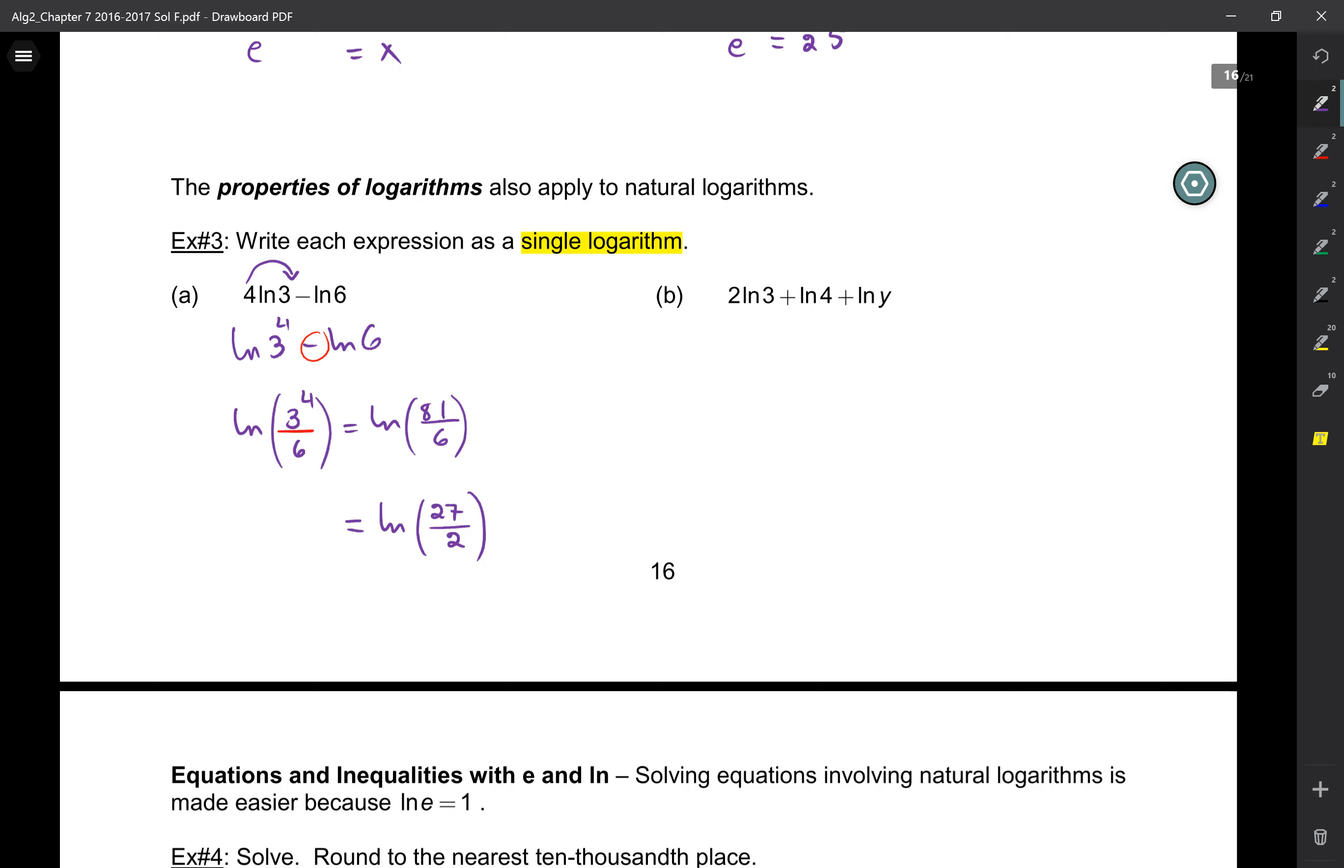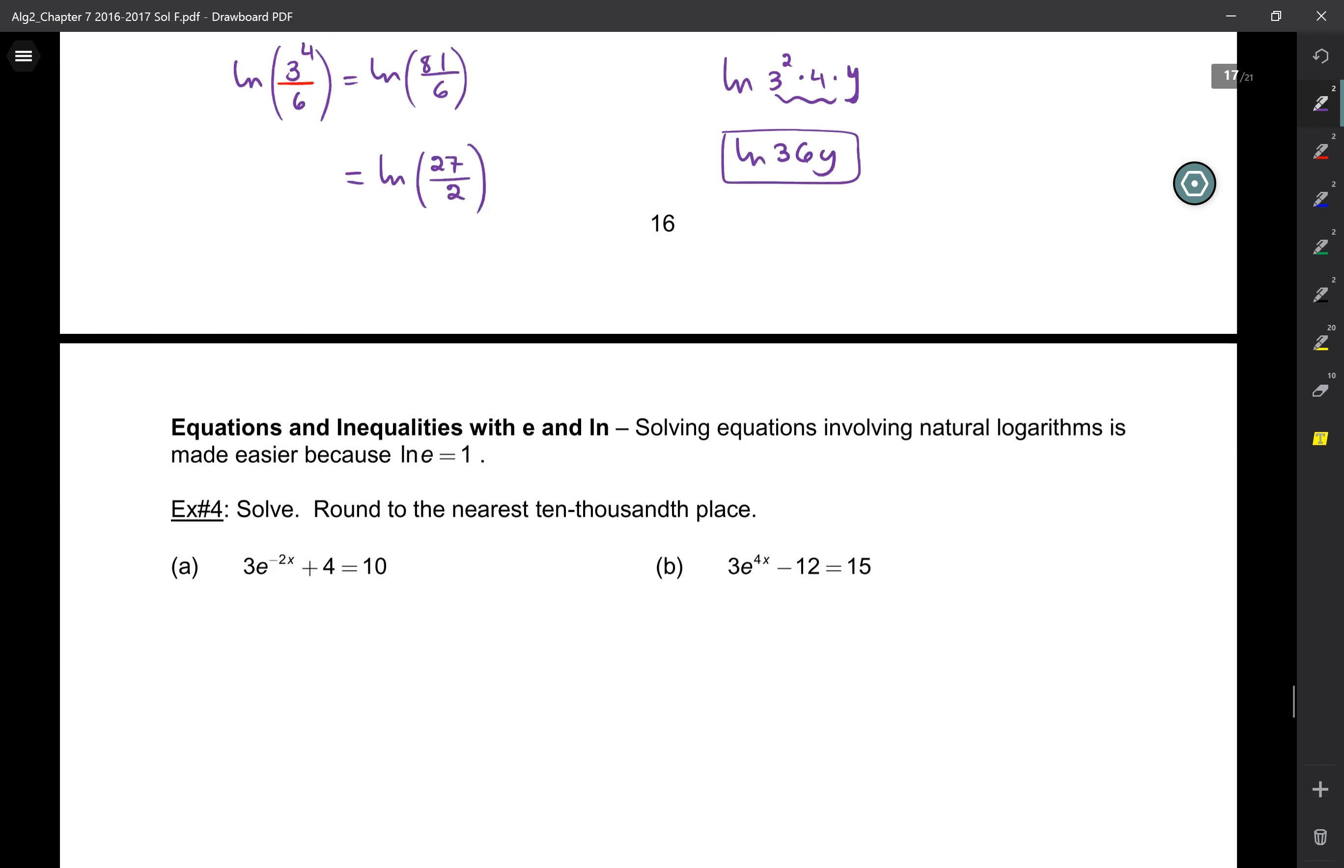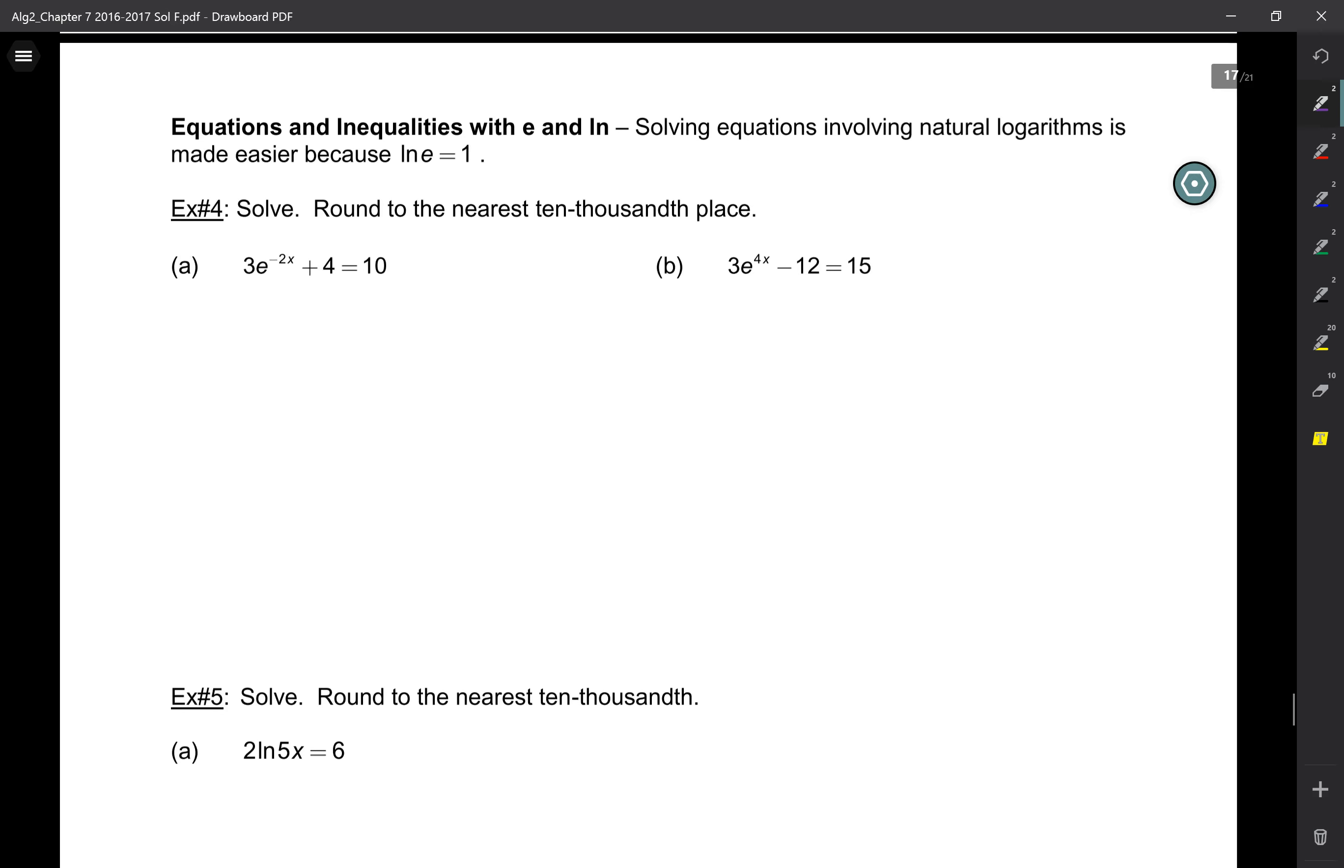What about the next one? What's going to happen to the 2? So that's ln of 3 squared plus ln of 4 plus ln of y. Now, what do these pluses translate to? Multiplication. So it's going to be ln of 3 squared times 4 times y. So that's ln of 36y. Questions?